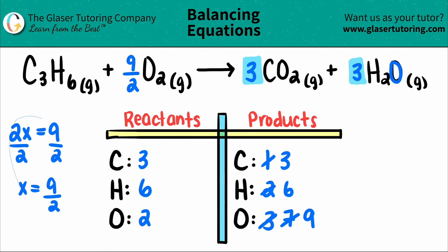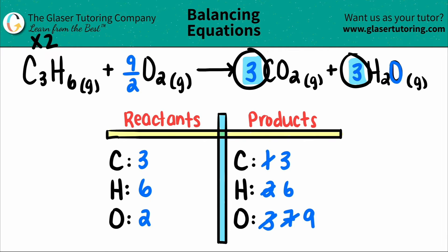Now just be careful. You can never leave a balanced equation with the fraction. So whenever you see a fraction, you're going to multiply the entire equation by the denominator to get that denominator canceled out. So in this case, since the denominator is two, I'm going to multiply everybody by two, which means that all the coefficients are going to be multiplied by two, just the big numbers, not the subscripts. So like this three, this three, this nine over two, and there's a secret one here.